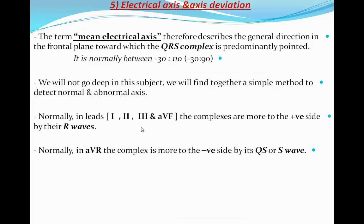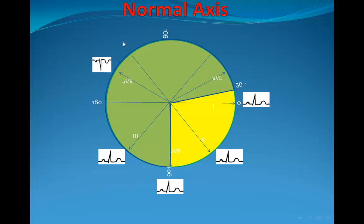Normally, leads I, II, III, and AVF have complexes more to the positive side by their R waves, and normally in AVR the complex is more to the negative side by its QS or S wave. This illustration draws all six limb leads, from which we will determine whether the axis is normal or abnormal, and if abnormal, whether it is right or left axis deviation.